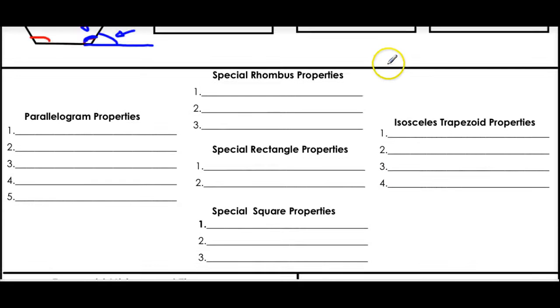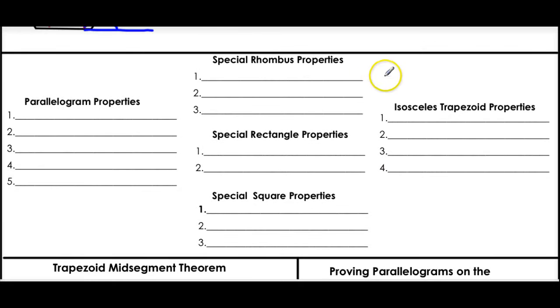Now, properties. You should check your notes to find these, but because I like you, I'm going to tell you all the properties. The parallelogram properties, let's just go through them. The opposite sides are parallel. Opposite sides are congruent.